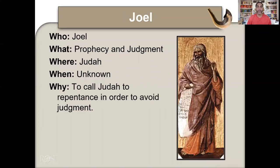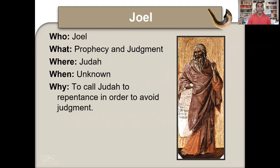Now we come to the prophet Joel — prophecy and judgment, located in Judah, date unknown, to call Judah to repentance in order to avoid judgment. That theme runs throughout both the major and minor prophets. It's the same theme: God calling people to repent of their sins, to turn away, warning them of the judgment to come.